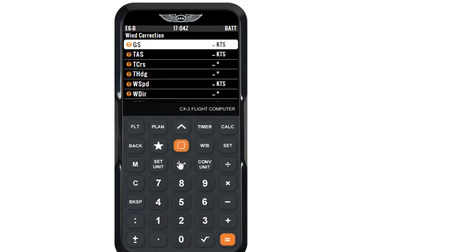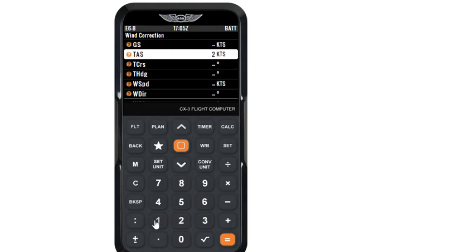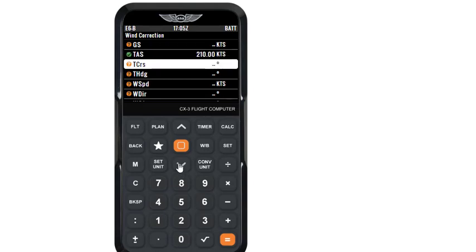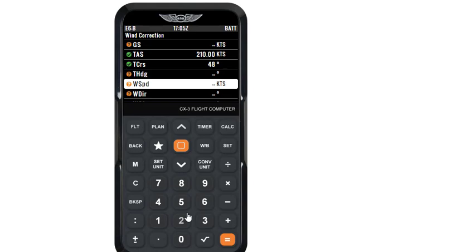In wind correction, let us enter the TAS as 210, track as 48 degrees, wind speed as 30 knots, and wind direction as 350.